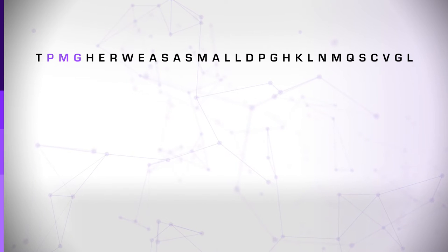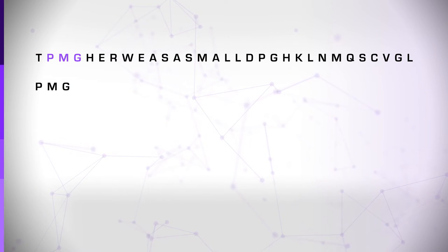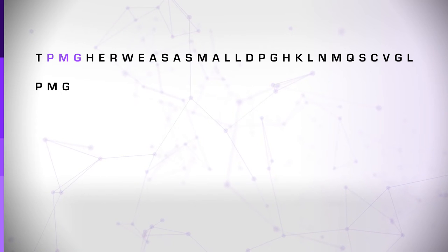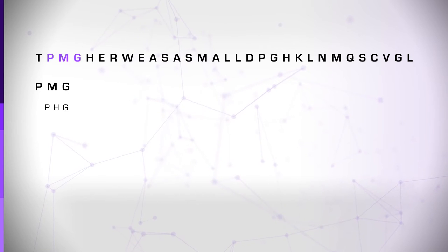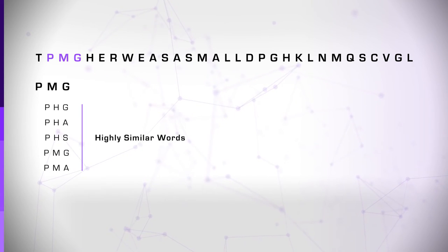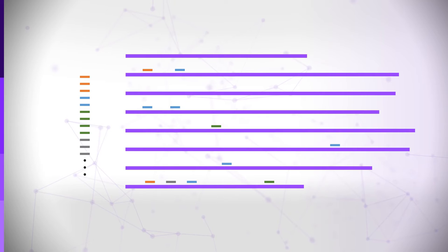For example, if the original word was the amino acid three-letter word PMG, which stands for proline, methionine, and glycine, the list can also contain PHG, which stands for proline, histidine, and glycine, and additional highly similar words. All of the words in the list are mapped to all the sequences in the database. This can be done efficiently because in the preprocessing step all the sequences in the database are indexed, as in a dictionary, so finding matching short words can be done without scanning the entire sequence each time.